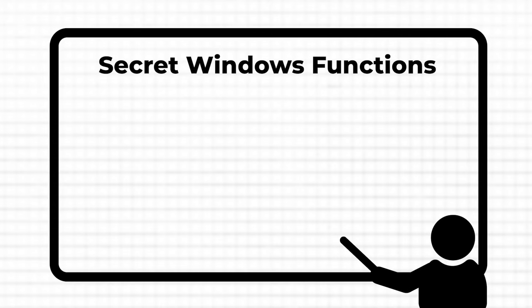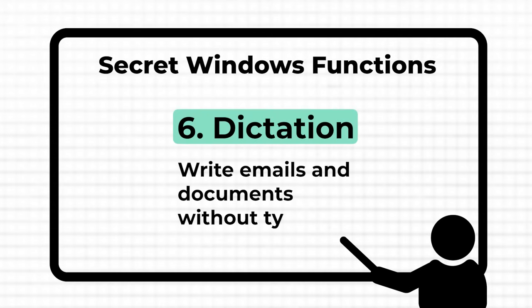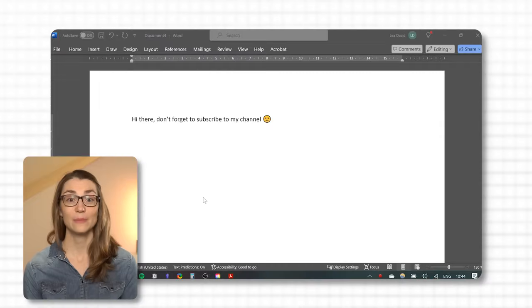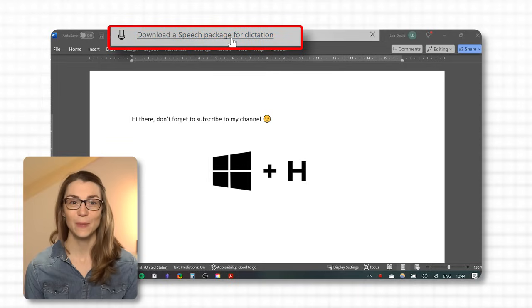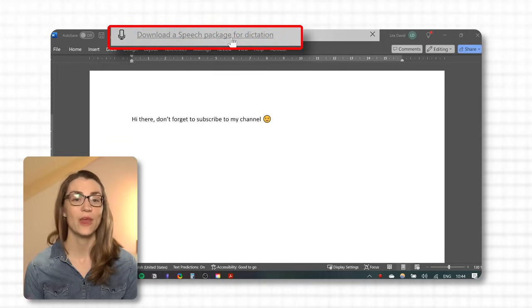If you know all the Windows functions covered in this video, you will be able to work more efficiently and be one step ahead of your colleagues or clients. The next feature elevates this even further — imagine you can write emails on the go or draft lengthy reports while going for a walk. This can be done with the Windows Dictate function, which transforms your voice into text. Simply press Windows + H and start speaking to draft an email or document without typing.